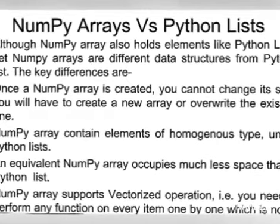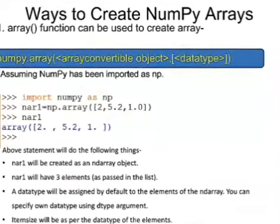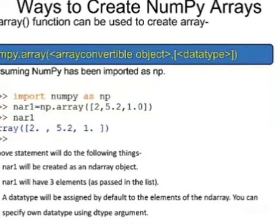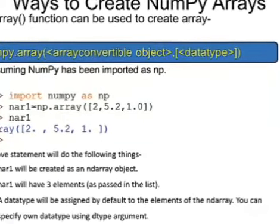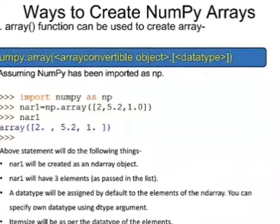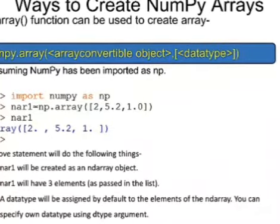Next, we have the ways to create NumPy arrays. The first and very familiar one is the array method. You can see here the syntax by which we have created the ndarray object. The name of the ndarray object is nar1 here. We have three elements in it. The data type will be taken as default by NumPy.